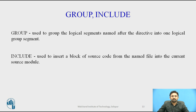The next directives are GROUP and INCLUDE. GROUP is used to tell the assembler to group the logical segments named after the directive into one logical group. For example, 'SMALL_SYSTEM GROUP CODE, DATA, STACK, SEGMENT'. INCLUDE is used to tell the assembler to insert a block of source code from a named file into the current source module, which shortens the source module. An alternative is to use the editor block command to copy the file into the current source module.